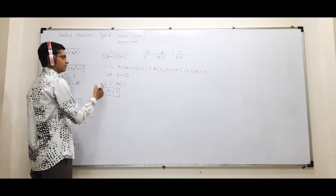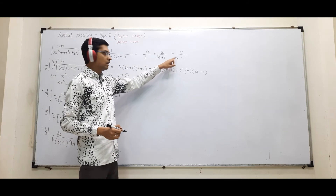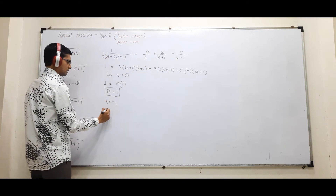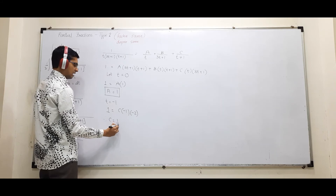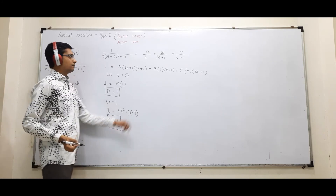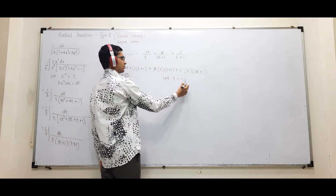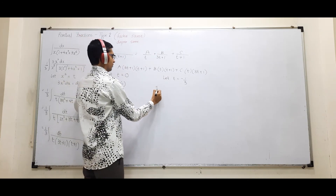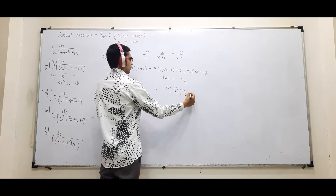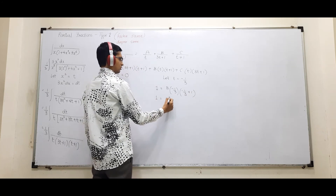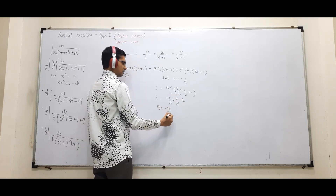Then take t = -1: A and B become 0. 1 = C·(-1)·(-2), so 1 = 2C, therefore C = 1/2. Now take t = -1/3: A and C become 0. 1 = B·(-1/3)·(2/3), so 1 = B·(-2/9), therefore B = -9/2.